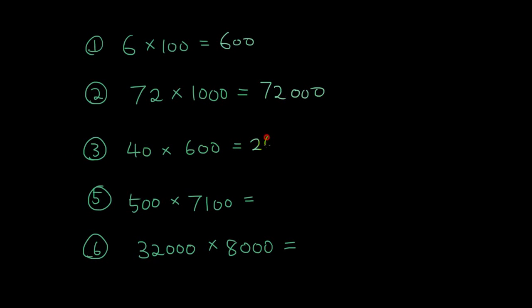40 times 600. 4 times 6 is 24. 1, 2, 3. 3 zeros. 500 times 7100. Let's do 1 times 5 is 5. 7 times 5 is 35. 4 zeros. 1, 2, 3, 4.